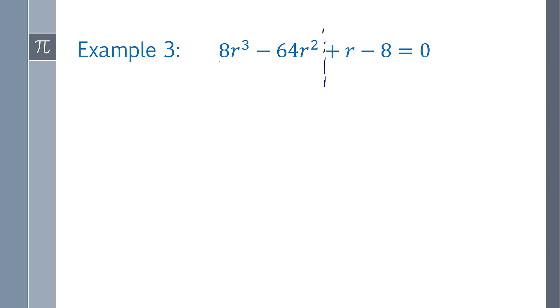There's an 8 in common, and then r squared. So I'm left with r minus 8, and then over here, there's nothing in common, so I can say 1. Now there's an r minus 8 in common, and so I now get r squared plus 1 equals 0.